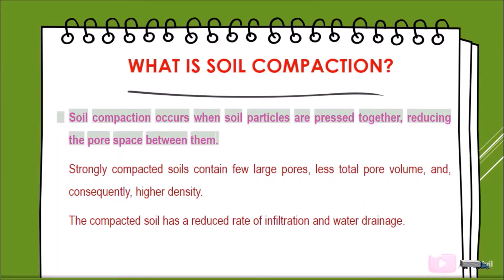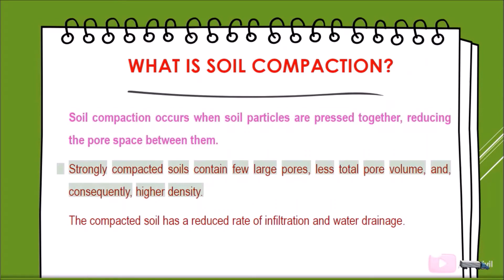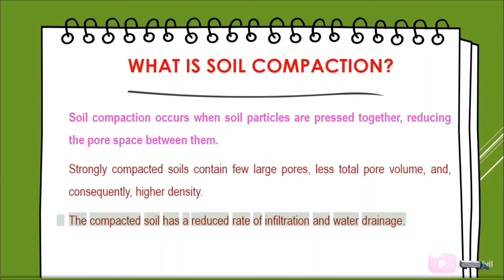Soil compaction occurs when soil particles are pressed together, reducing the pore space between them. Strongly compacted soils contain few large pores, less total pore volume, and consequently higher density. The compacted soil has a reduced rate of infiltration and water drainage.